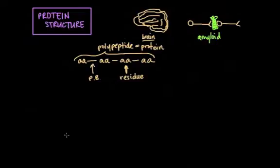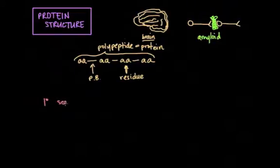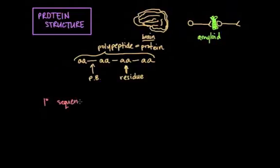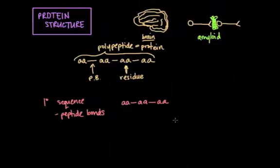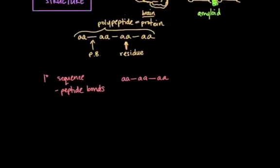So at the most basic level, you have primary structure. And primary structure just describes the linear sequence of amino acids. It is determined by the peptide bond linking each amino acid. So if I were to take my amyloid example from Alzheimer's disease and stretch out that protein all the way, then this linear sequence is just the primary structure.